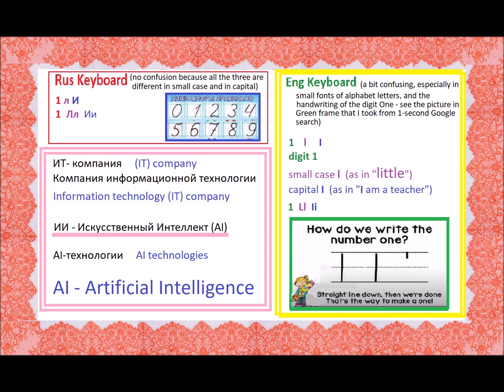Now let's look at the Russian keyboard in the left upper corner of my slide, framed in red. We can see how easy it is to differentiate the Russian digit one. You can see the Russian handwriting in a dark blue frame. Also, Russians put a little cross-stroke on the digit seven while Americans do not. This is a helpful identifier when looking at fast handwriting of digits one or seven.